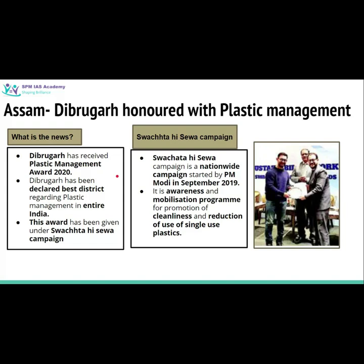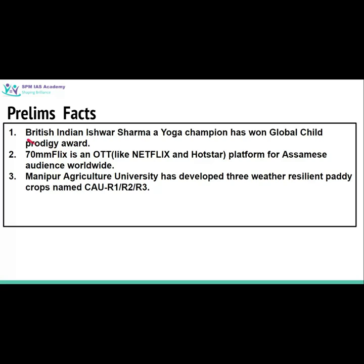Let us cover some prelims-related facts from the newspaper. British-Indian Iswar Sarma, a yoga champion, has won the Global Child Prodigy Award. 70mm Flix is an over-the-top service like Netflix and Hotstar and is a platform for SME audiences worldwide. Manipur Agriculture University has developed three weather-resilient paddy crops named CAU-R1, R2, and R3. That's all from our side today. Thanks for watching.